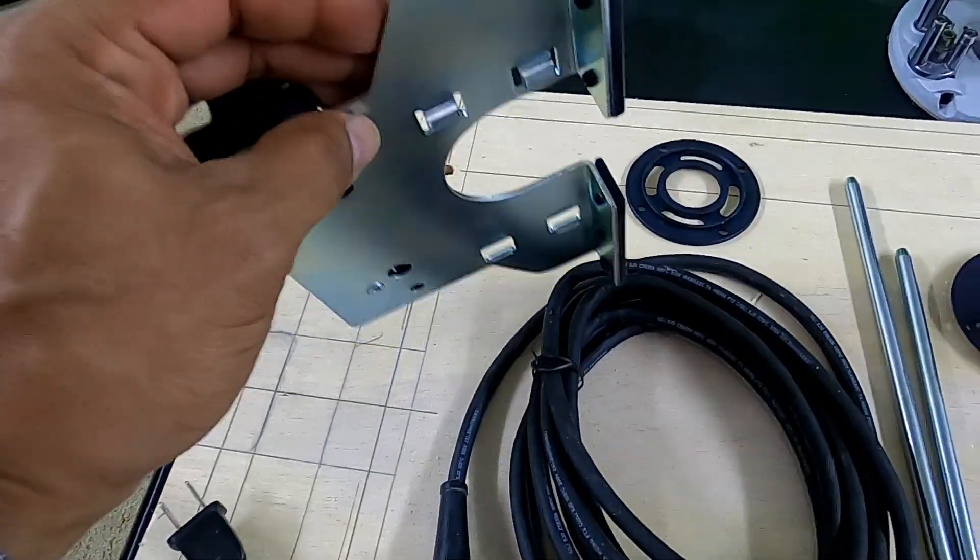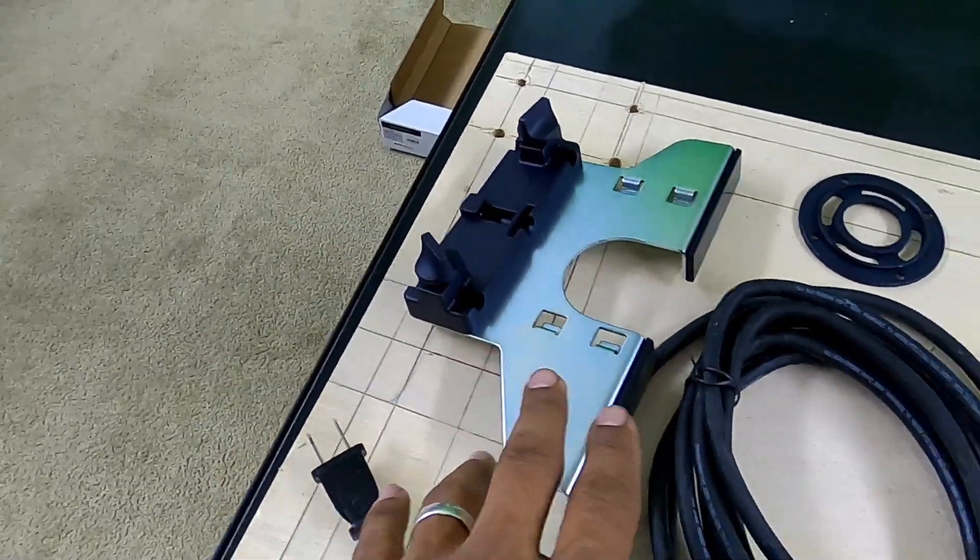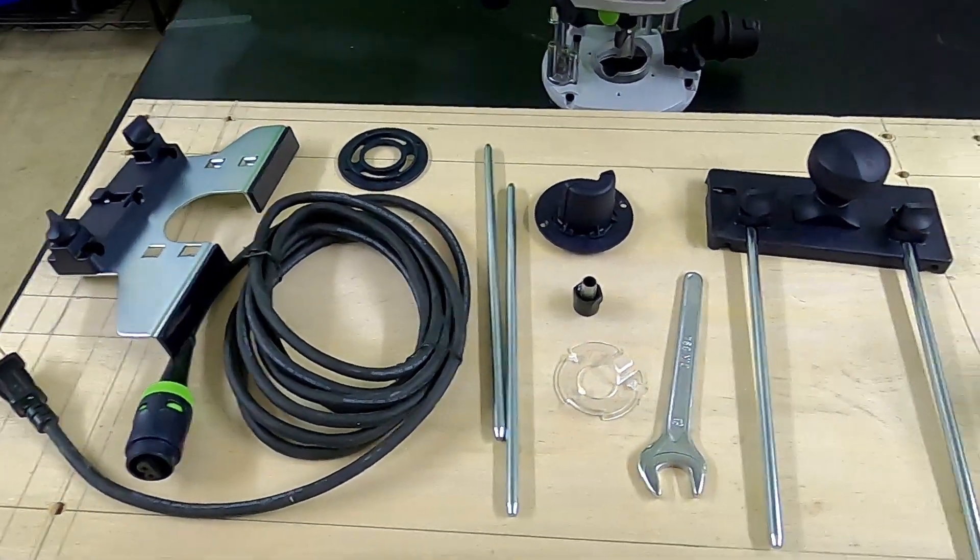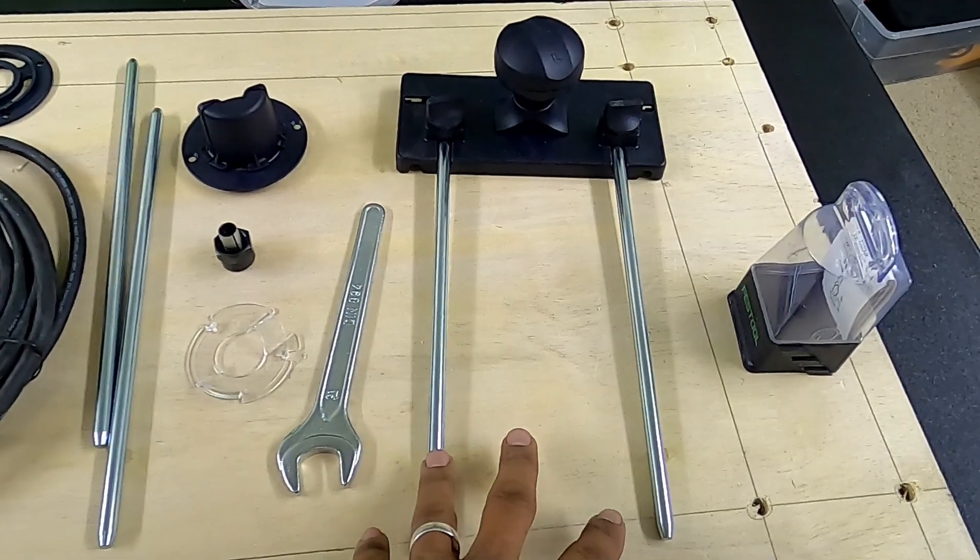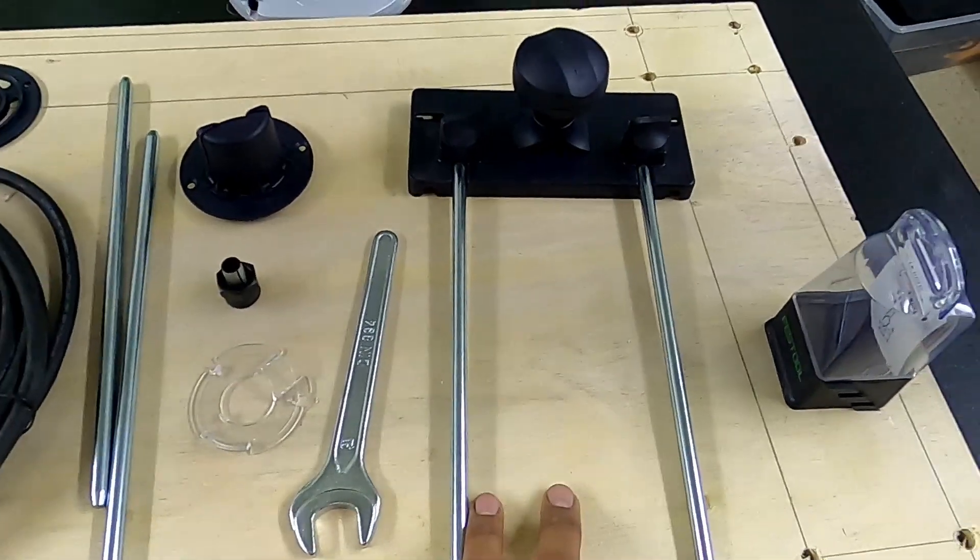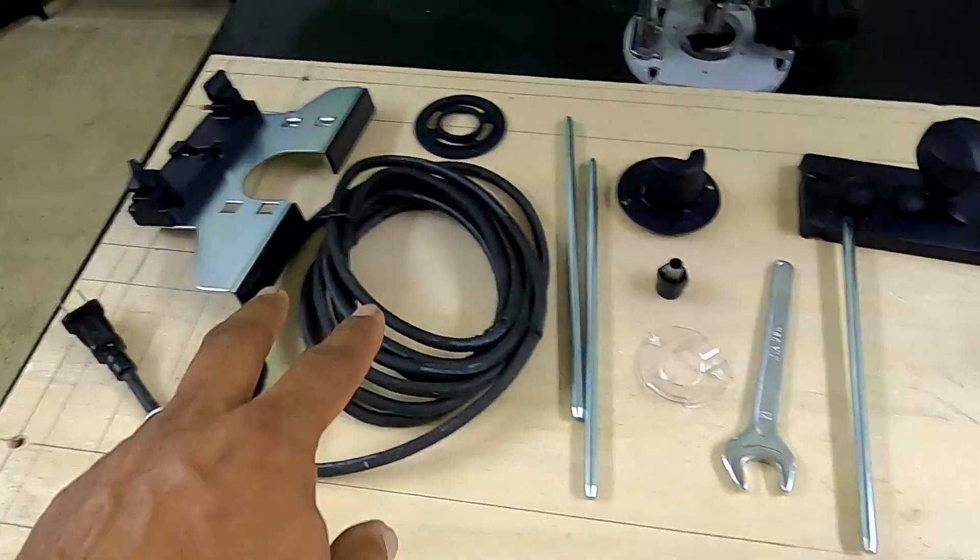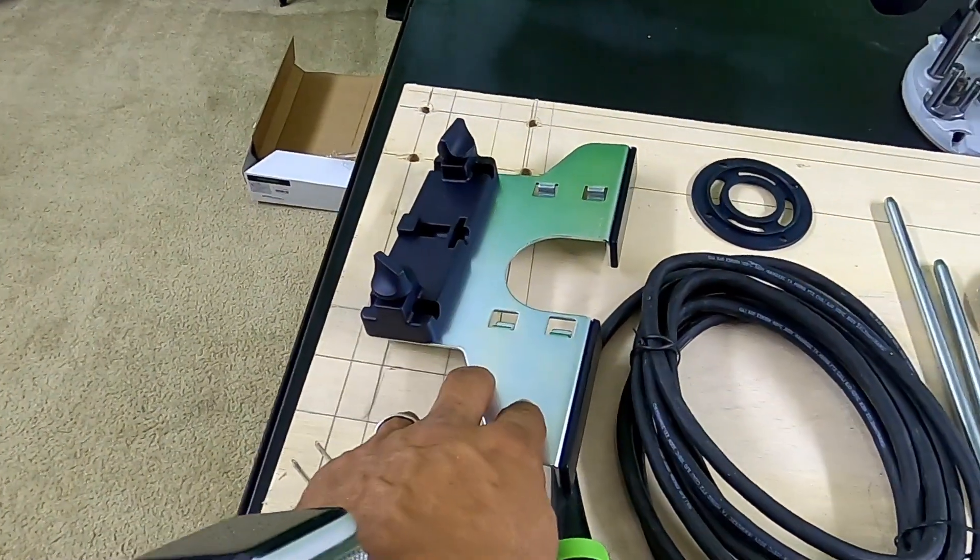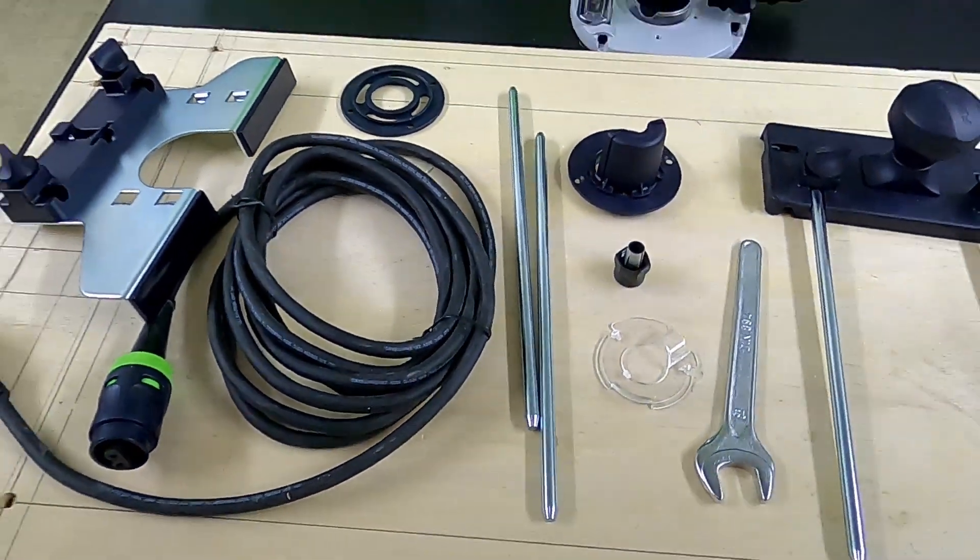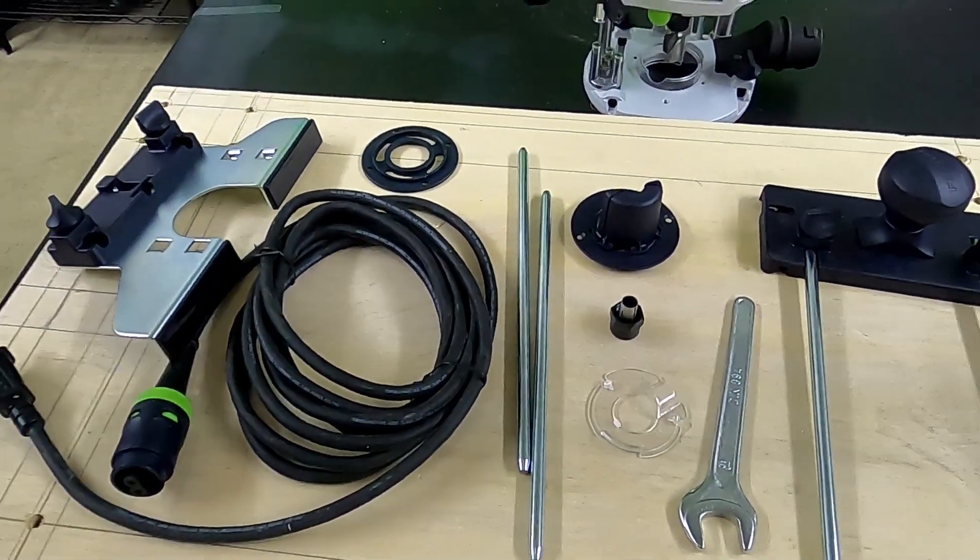I found that to be interesting. When you buy the actual OF 1010 REQ F, it comes with the edge guide with two rods. But when you buy the actual edge guide itself for the 1010, it comes with another set of two rods.